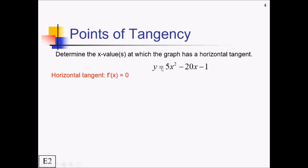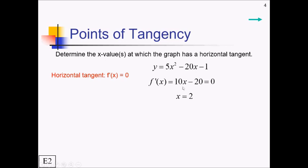Let's go ahead and take the derivative — that's going to be 10x minus 20. We want to figure out where this equals 0. Add 20 and divide by 10, and you get an x-value of 2. Another way you might see this problem is they ask where the graph is parallel or perpendicular to another line — in all these cases, you're just setting your derivative equal to the desired slope.